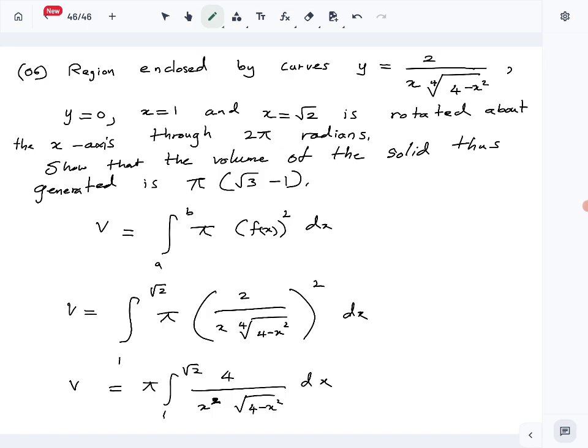The fourth root becomes square root when you square it, so you have π integral from 1 to square root 2 of 4 over x squared times square root of 4 minus x squared. There's no direct way to find this integral, so you have to use another method. Substitution works because this is a squared minus x squared type.